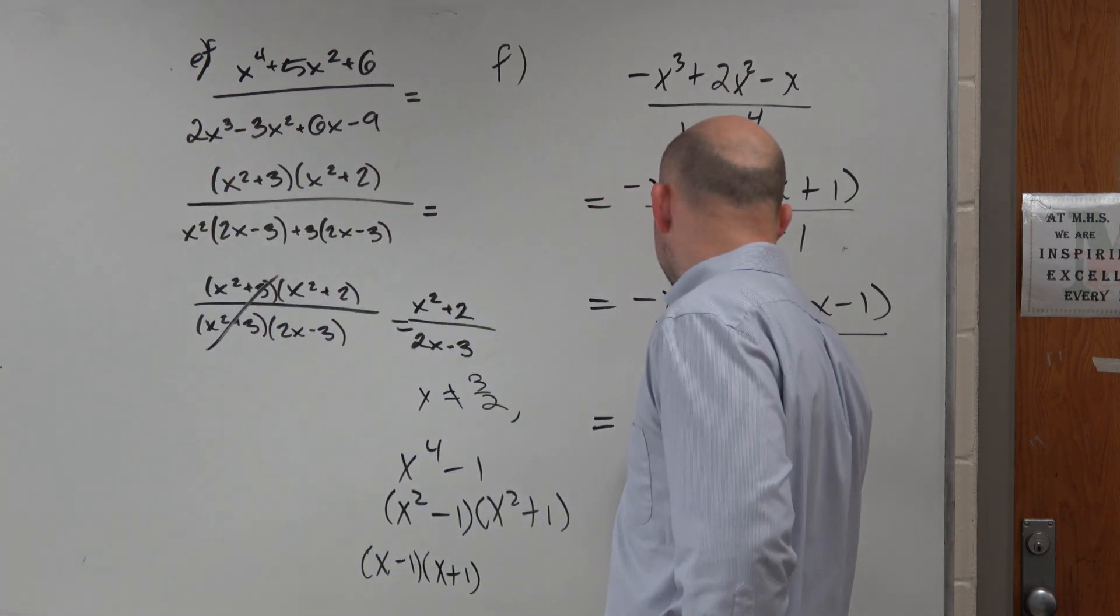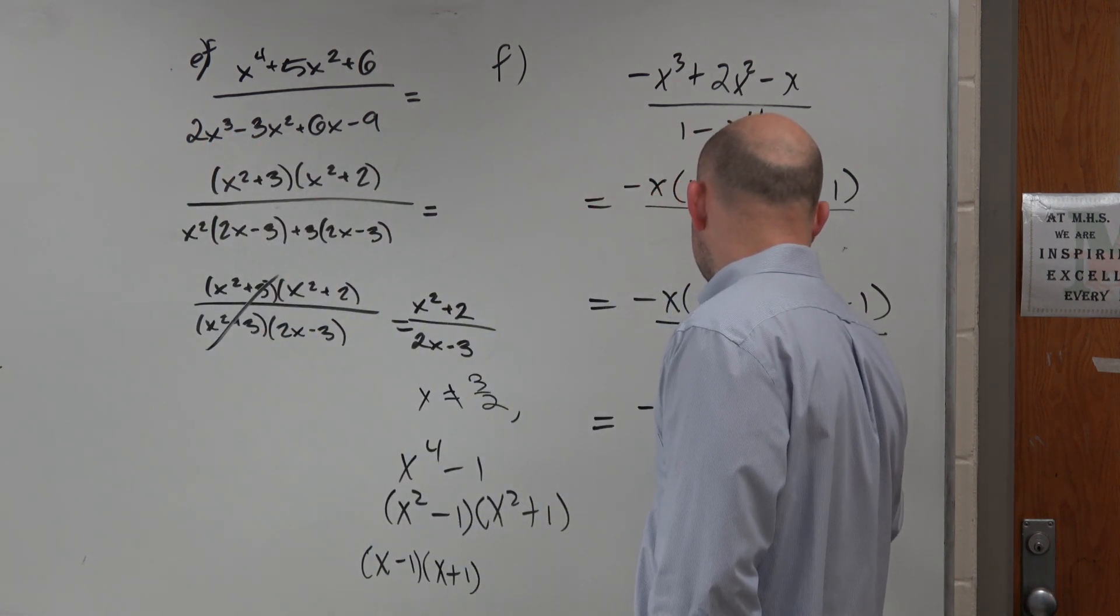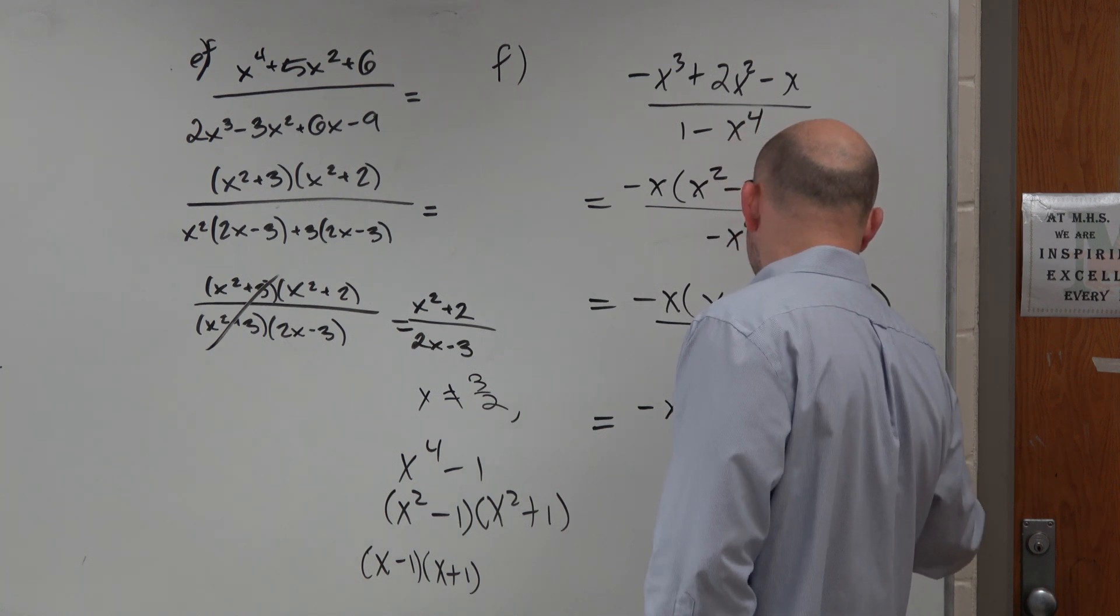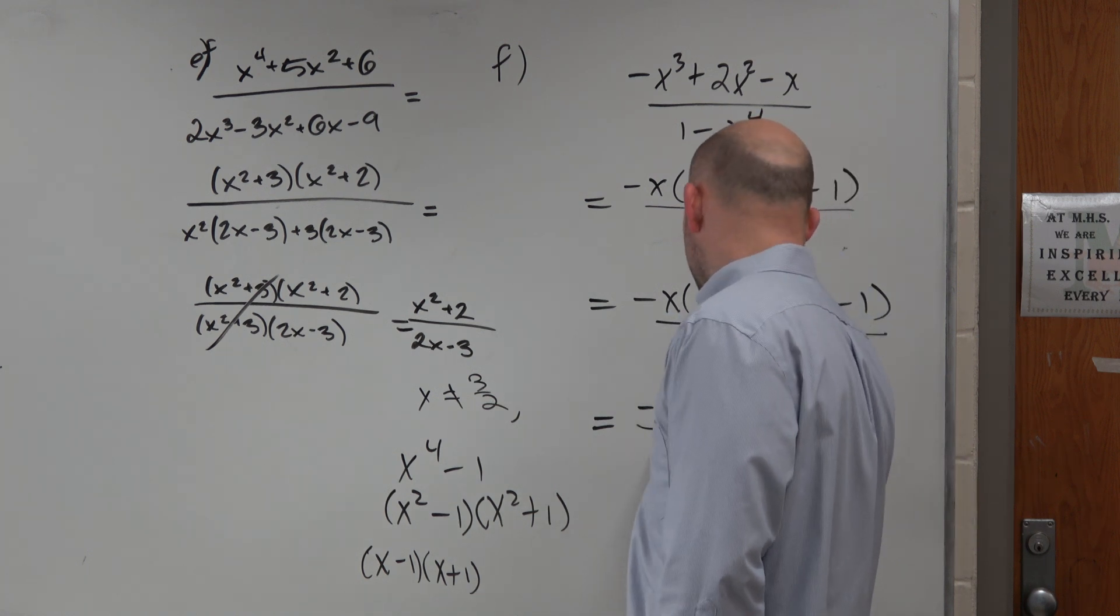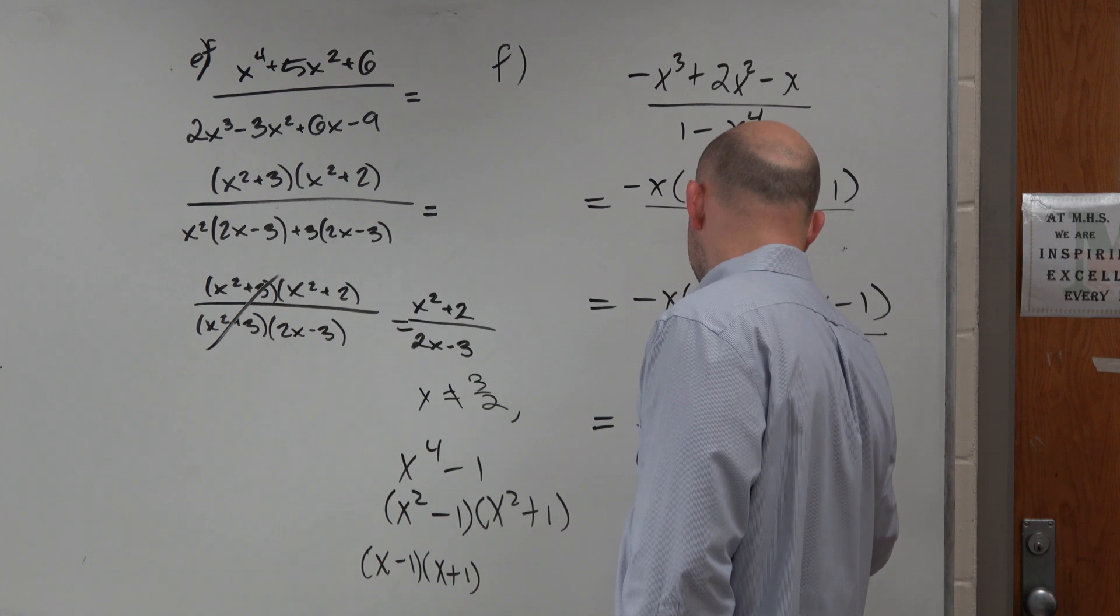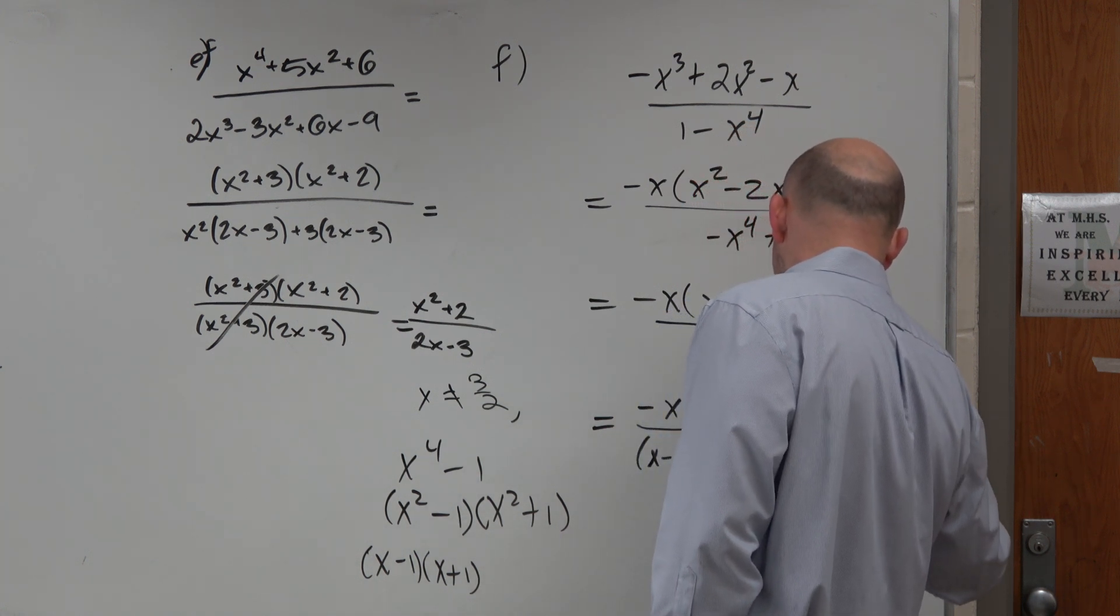So now we have a final -x times (x - 1) times (x - 1) all over (x - 1) times (x + 1) times (x² + 1).